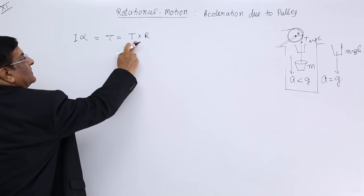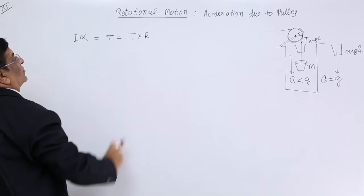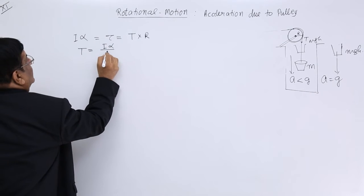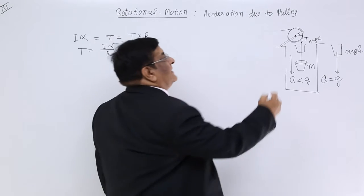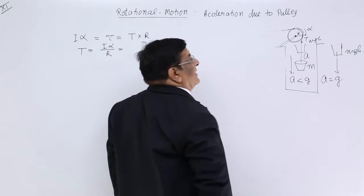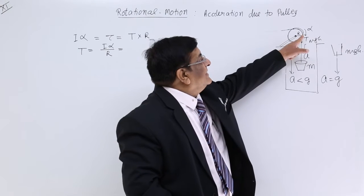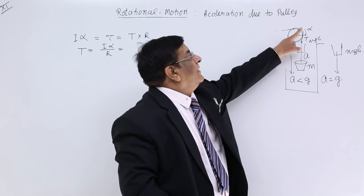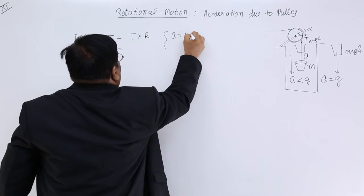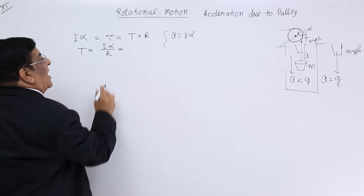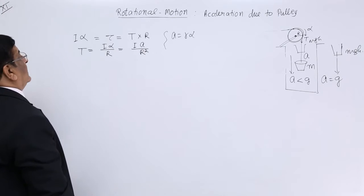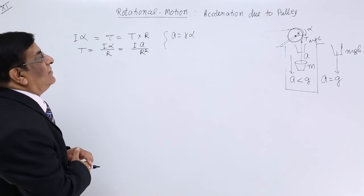Now this tension we want to omit. So how much is tension here? Tension is equal to I alpha upon r. Alpha is angular acceleration here. And here it is falling down with linear acceleration a. Linear acceleration is a. Here angular acceleration is alpha. What is the relation between the two? We know the relation: a is equal to r alpha, or alpha is equal to a upon r. So we can write tension as I times a upon r, and this one r makes it square. So tension is equal to I a upon r square.